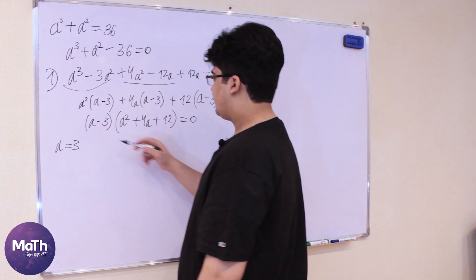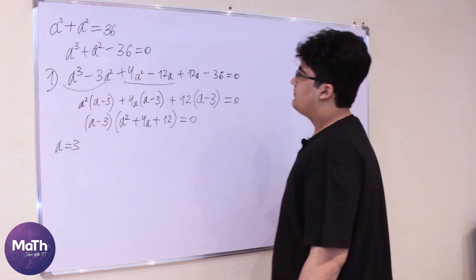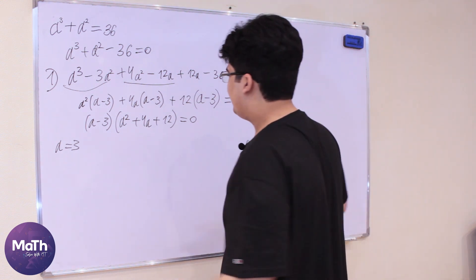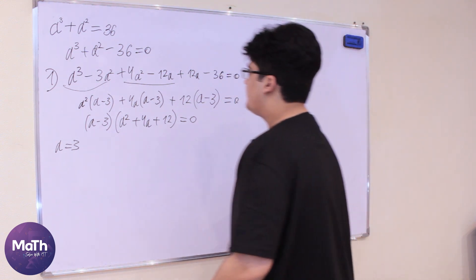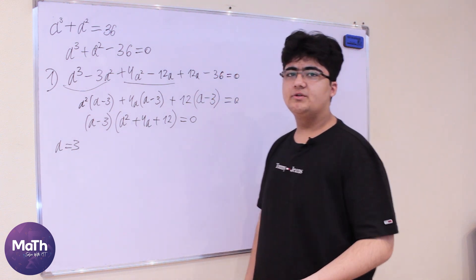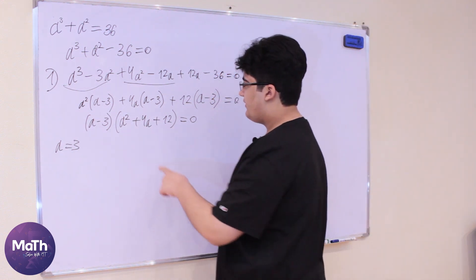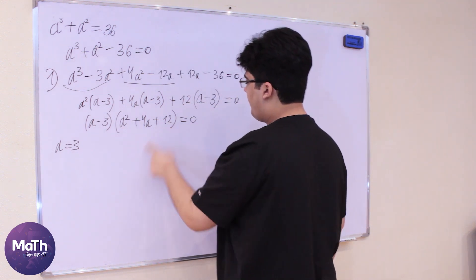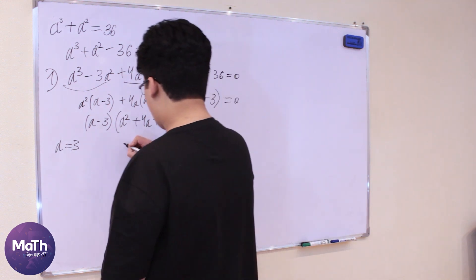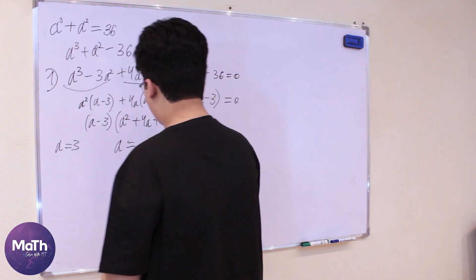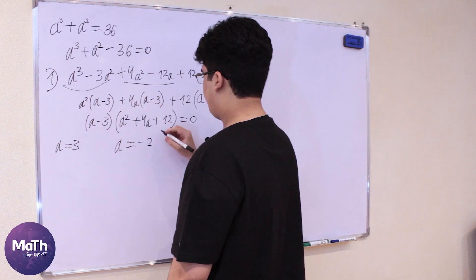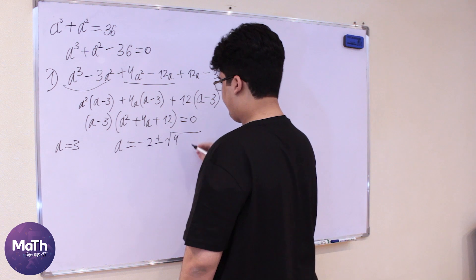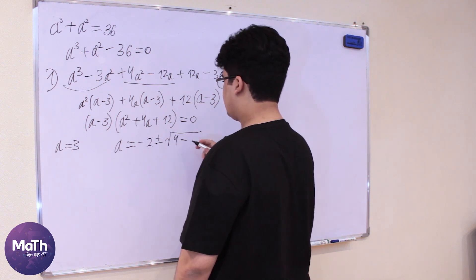The discriminant — delta — of a² + 4a + 12 is less than zero. But since the problem doesn't say to find only real solutions, we'll find the complex solutions as well. We get: a = -2 ± √(4 - 12).